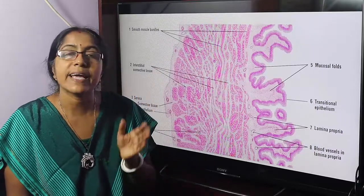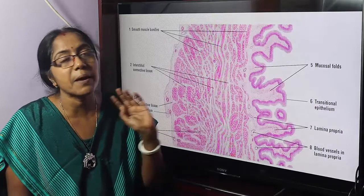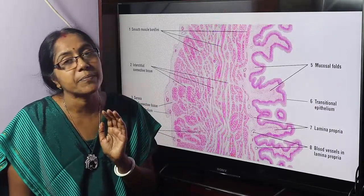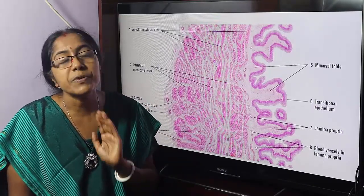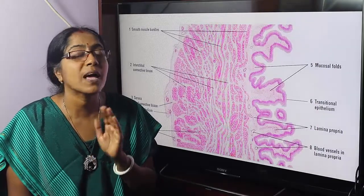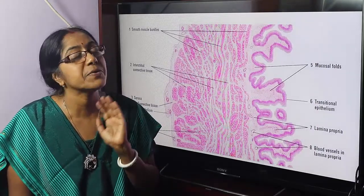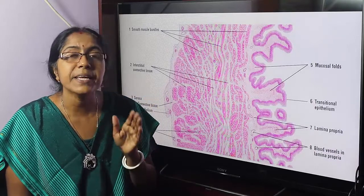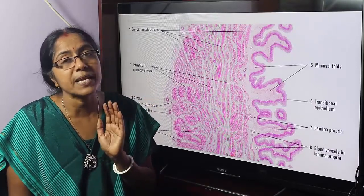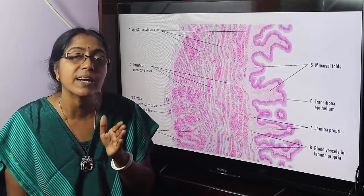Mucosa is again composed of two layers: the lining epithelium and the lamina propria. The lining epithelium of the urinary bladder is a transitional epithelium.